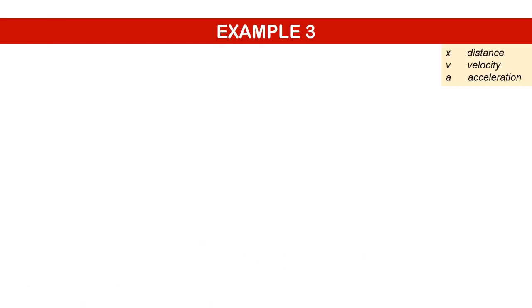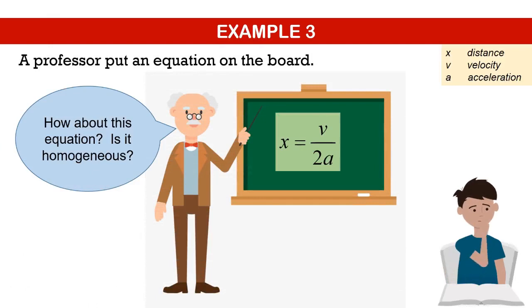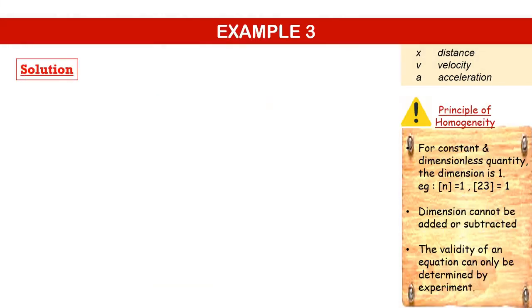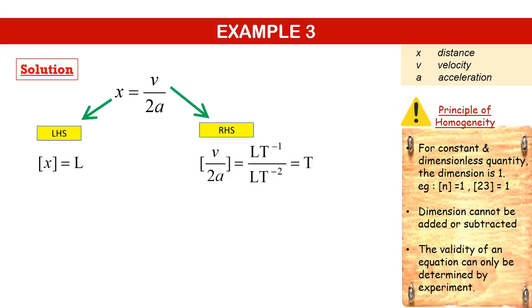Example 3. Alright students, how about this equation? Is it homogeneous? On the left-hand side, dimension for x is capital L. On the right-hand side, dimension for velocity is LT^-1, and for a is LT^-2. When we cancel the same term, we end up with capital T. Therefore, the equation is non-homogeneous.